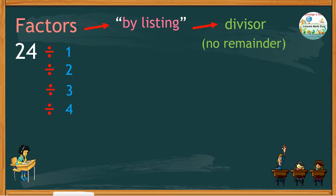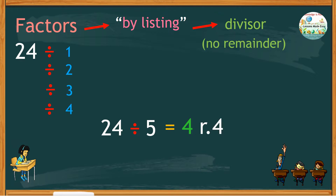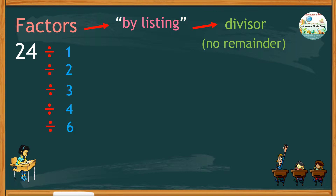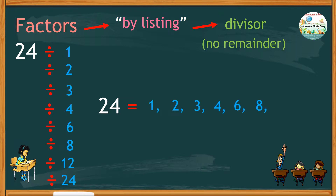How about 5? If we divide 24 by 5, we get 4 remainder 4, so 5 is not a factor of 24. Moving on to 6, which exactly divides 24 with no remainder. 8 is fine too, as well as 12, and of course 24 itself.